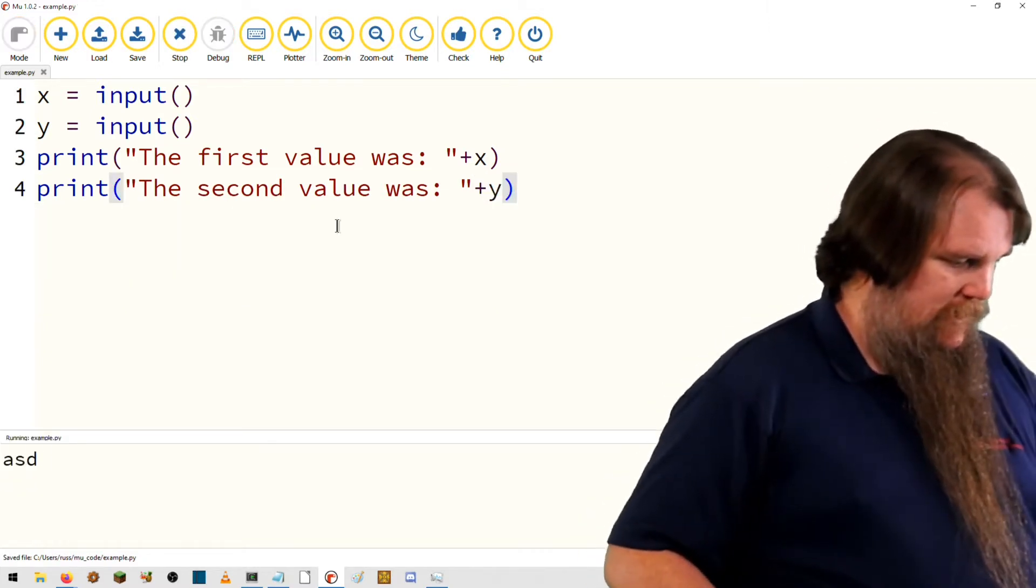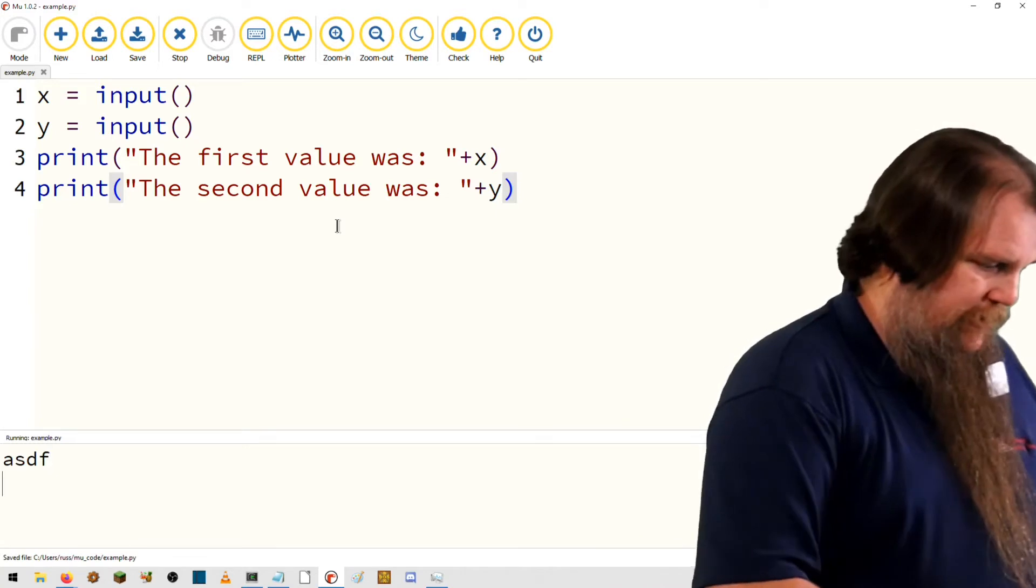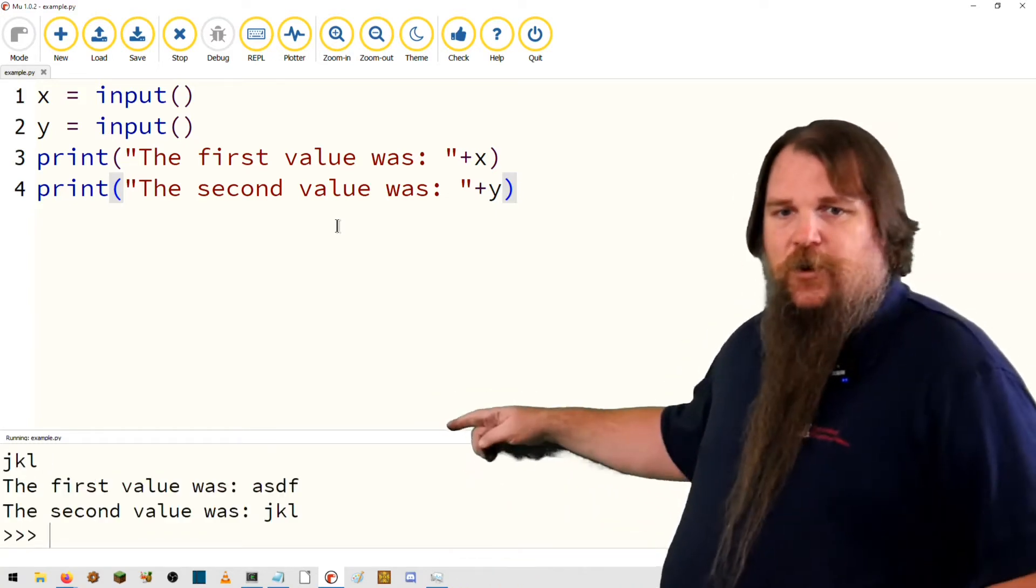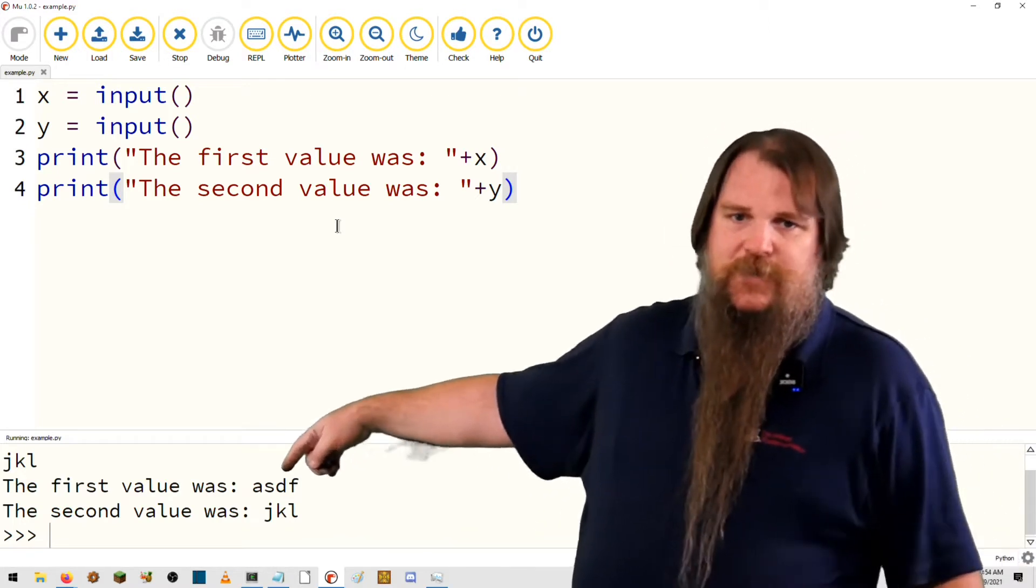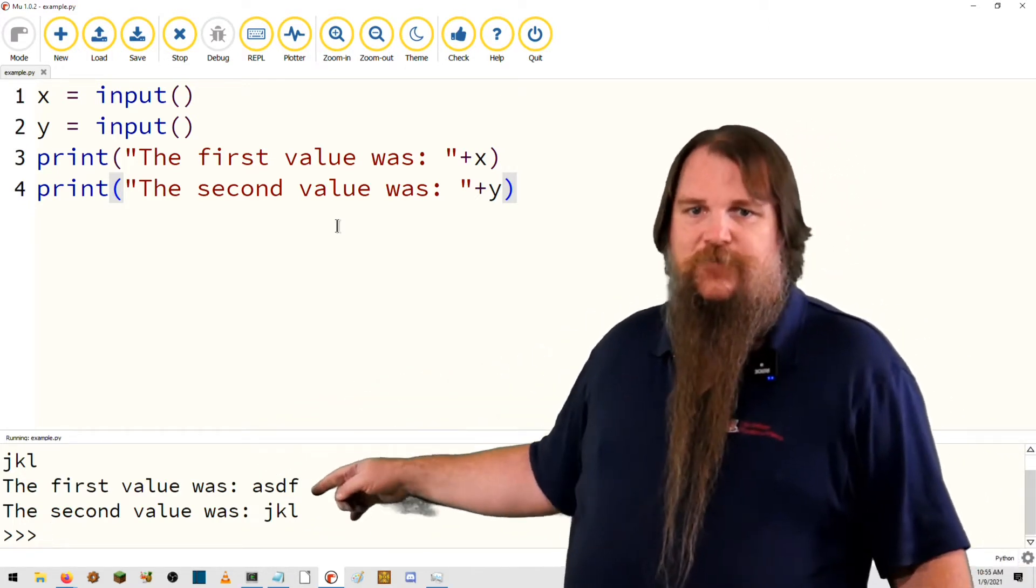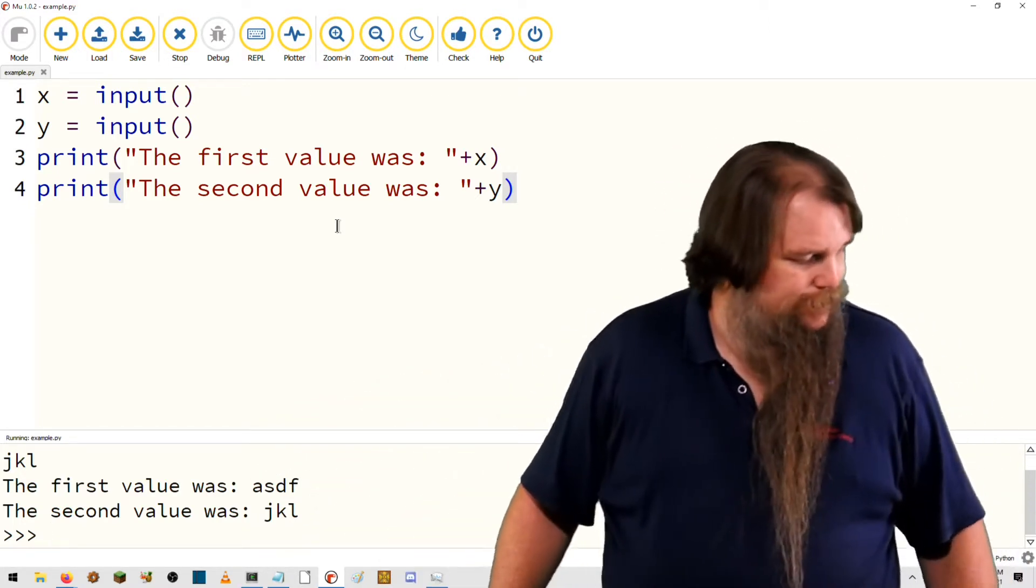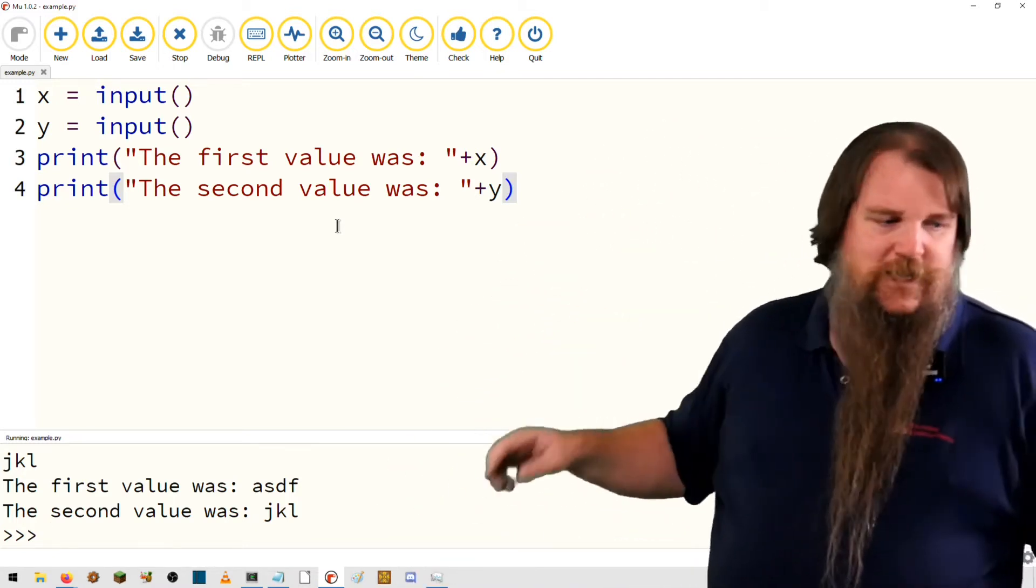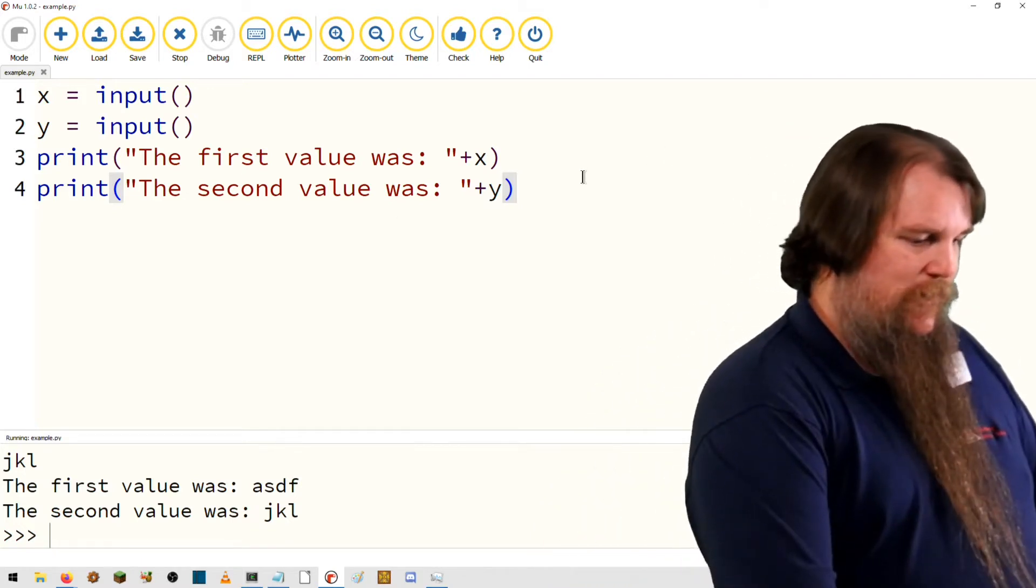All right. So let's print ASDF return, JKL return. The first value was ASDF. The second value was JKL. So what information can we extract out of this? Let's do some other things.